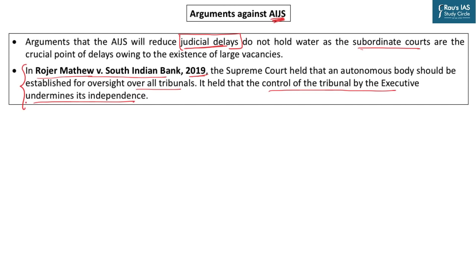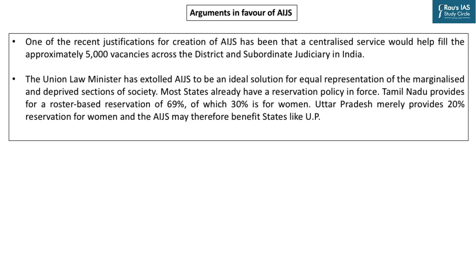Arguments in favor of AIJS: presently there are approximately 5,000 vacancies across the district judicial system and subordinate judiciary in India, which AIJS could help fill. The Law Minister has also been enthusiastic about equal representation of marginalized and deprived sections in the judicial system — reservation will be provided in AIJS just as in other All India Services. However, reservation already exists in many states: Tamil Nadu provides roster-based reservation of 69% (30% for women), and Uttar Pradesh provides 20% reservation in judicial services. AIJS would make this uniform, benefiting marginalized sections in states with lower reservation.